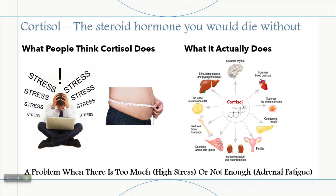Cortisol is a hormone that we would die without, and a lot of people think cortisol is just a stress hormone that causes belly fat, but it actually feeds into a lot of other really important processes. It's involved in the immune system, fertility, and bone metabolism. Its main purpose is to mobilize fats and sugars under times of fight or flight, but it also has anti-inflammatory properties. So quite often the reason cortisol is high is because the person has an inflammation problem or a stress problem going on in the body.